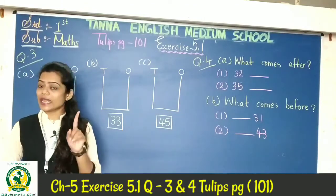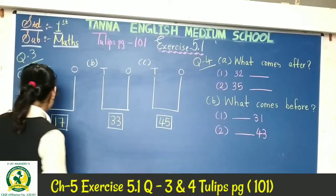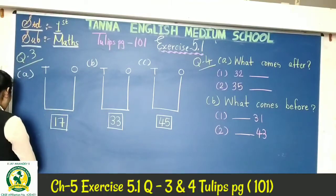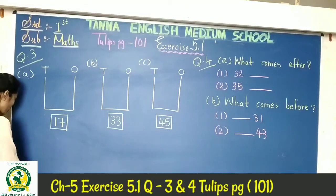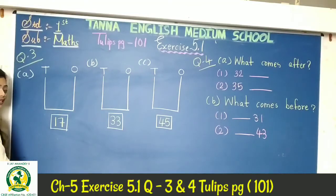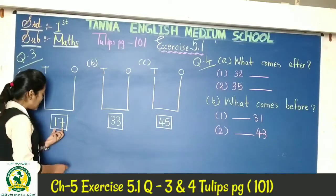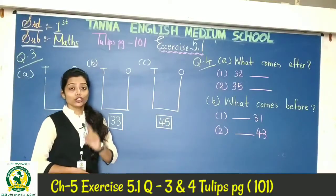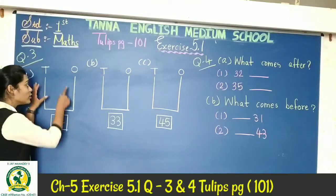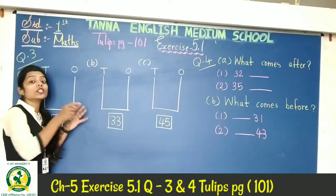Question number 3 is that you have to add abacus here. You have to add abacus and you have to add numbers. Here is a blank abacus — we have to add beads.